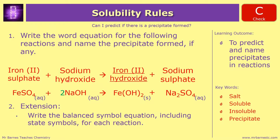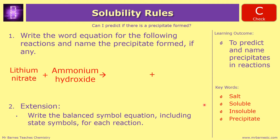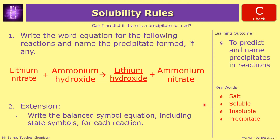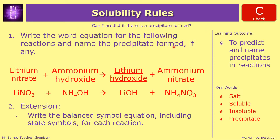So in terms of marks: one mark for the word equation, one mark for the precipitate, two marks for the balanced equation, and one mark for the state symbols. Question two - we should have had lithium hydroxide and ammonium nitrate. In this case, your precipitate would be lithium hydroxide. Lithium nitrate is LiNO₃, ammonium hydroxide is NH₄OH, lithium hydroxide is LiOH, and ammonium nitrate is NH₄NO₃. In this situation it's already balanced, you don't need to do any more. State symbols: aqueous, aqueous, solid for your precipitate, and aqueous. One mark for the word equation, one mark for the precipitate, one mark for the symbol equation, and one mark for the state symbols.